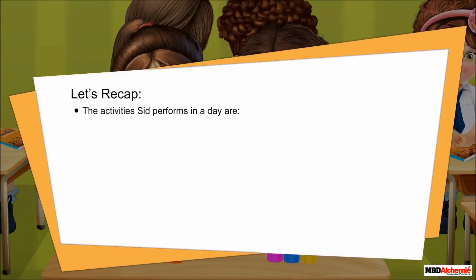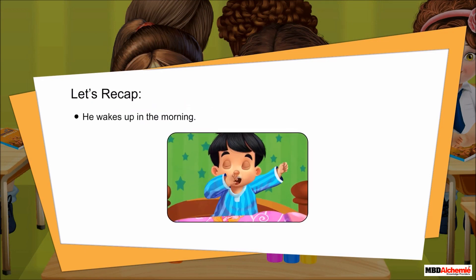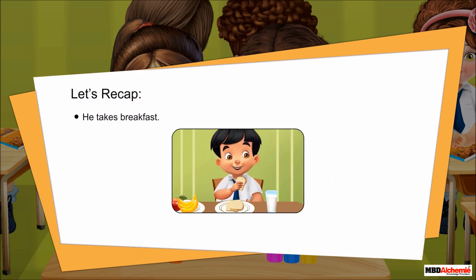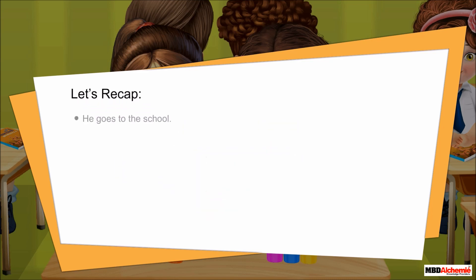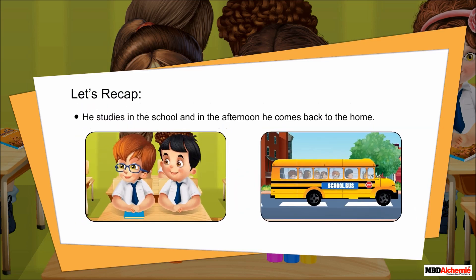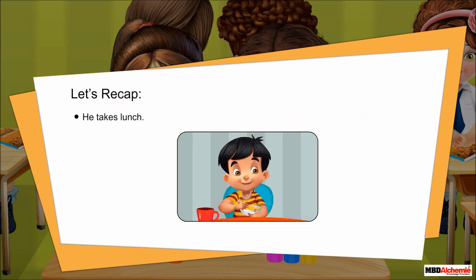Let's recap. The activities Sid performed in a day are: he wakes up in the morning, he brushes his teeth, and then he takes a bath. He takes breakfast. He goes to school. He studies in the school, and in the afternoon, he comes back home.